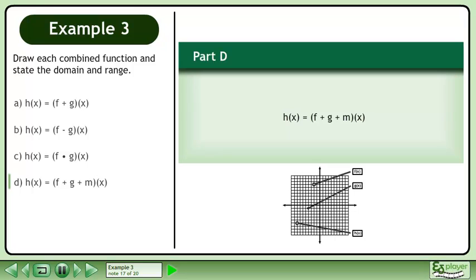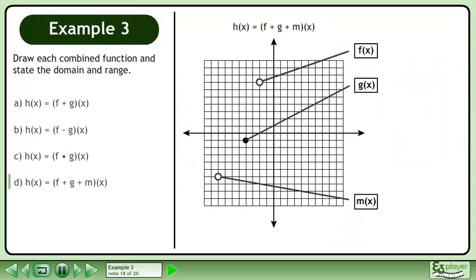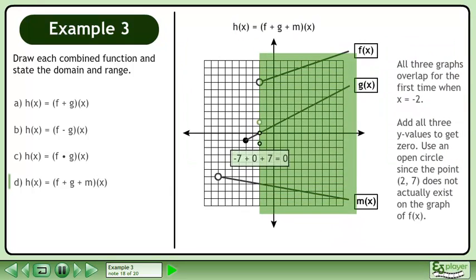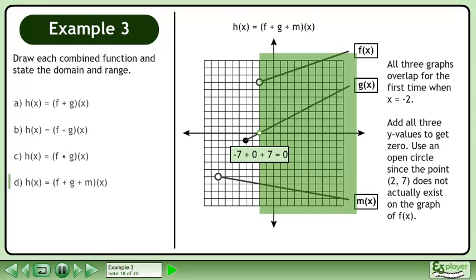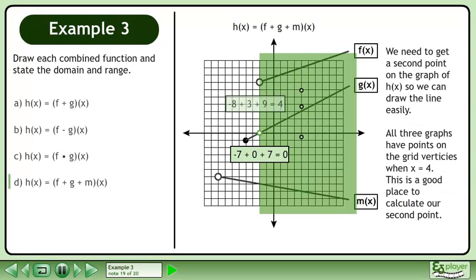In part d, we'll graph h equals f plus g plus m. All three graphs overlap for the first time when x equals negative two. Add all three y values to get zero. Use an open circle since the point does not actually exist on the graph of f. We need to get a second point on the graph of h so we can draw the line easily. All three graphs have points on the grid vertices when x equals four. This is a good place to calculate our second point.